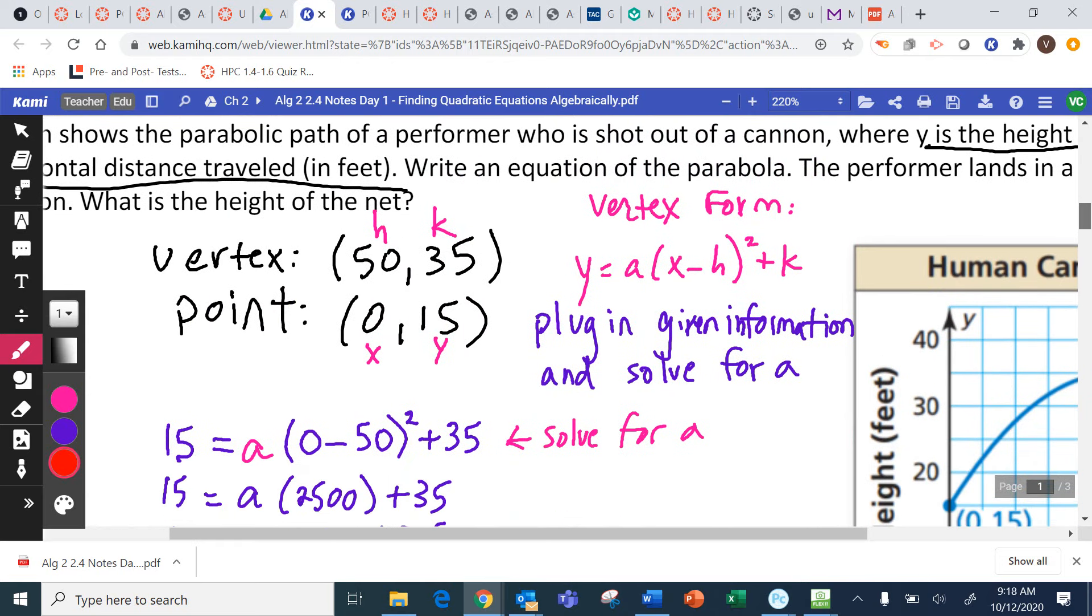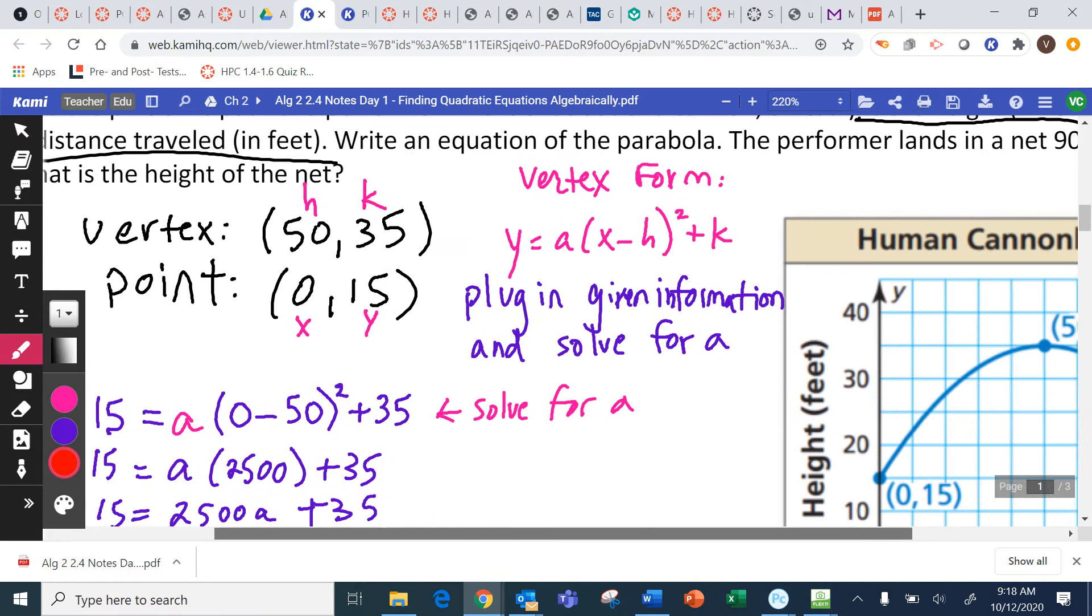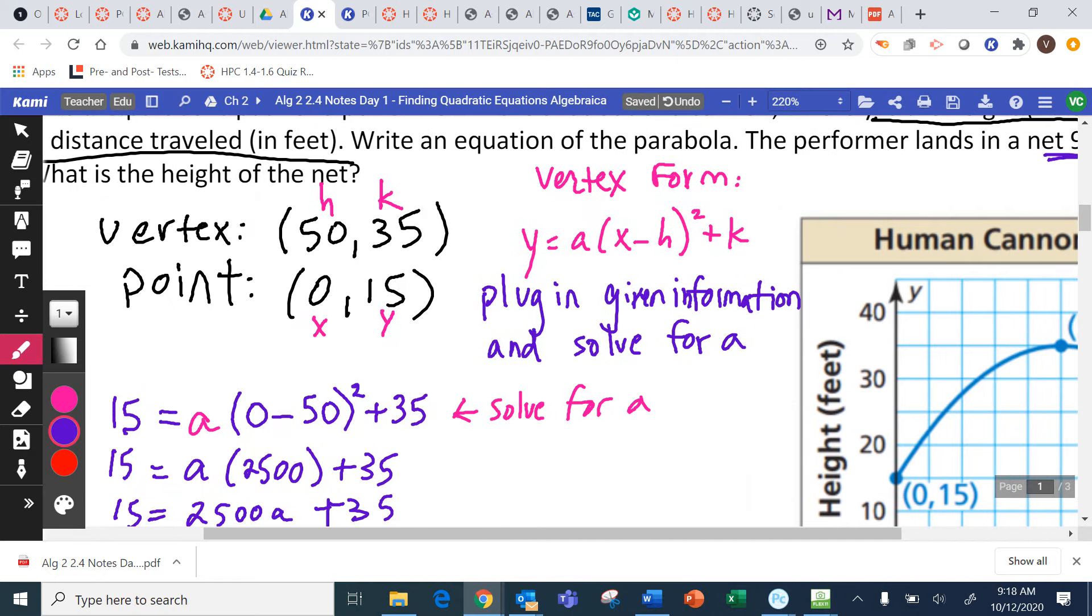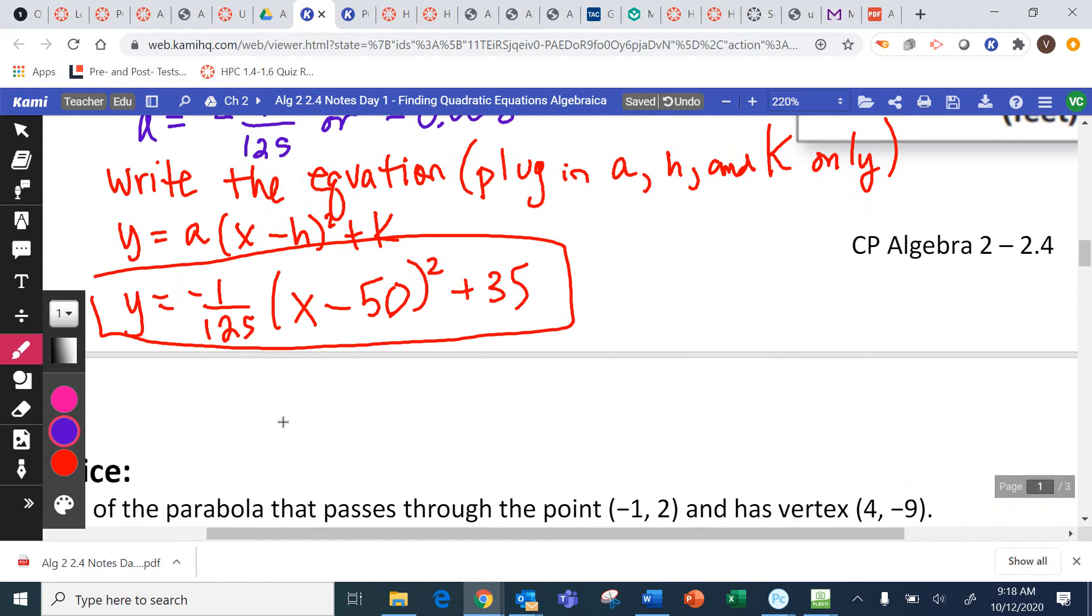And you can see, there's one more part to this, right? The performer lands in a net 90 feet from the cannon. What is the height of the net? So horizontally, the performer lands 90 feet away. So that's telling me my X value is 90 feet. And then, what is the height of the net? So that just means we need to plug in 90 for X and solve for Y. And you can use your calculator. Y equals negative 1 over 125 times 90 minus 50 squared plus 35.